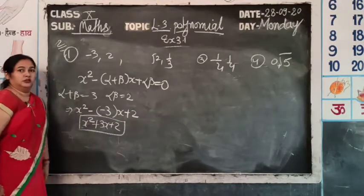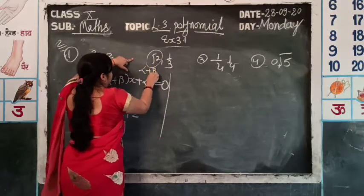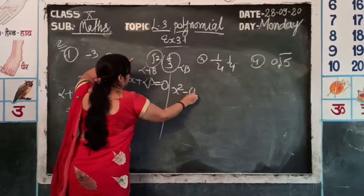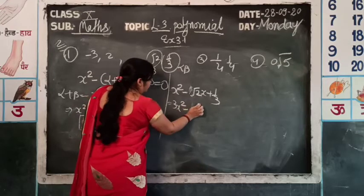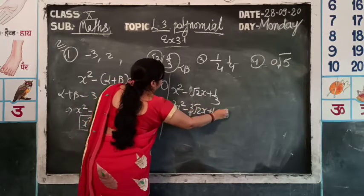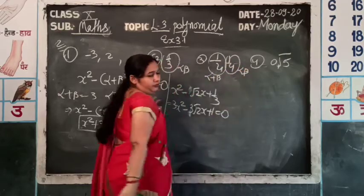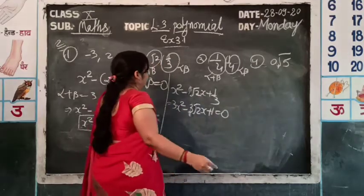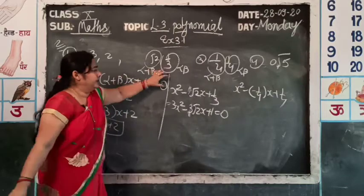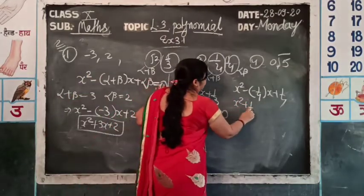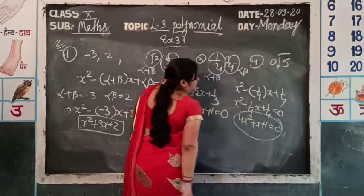Second number: alpha + beta = √2, alpha × beta = 1/3. Using the formula: x² - √2·x + 1/3 = 0. Third number: alpha + beta = -1/4, alpha × beta = 1/4. Using formula: x² - (-1/4)x + 1/4 = x² + 1/4x + 1/4 = 0, multiply through by 4: 4x² + x + 1 = 0.